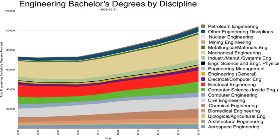Engineering training in Tanzania is typically provided by various universities and technical institutions in the country. Graduate Engineers are registered by the Engineers Registration Board after undergoing three years of practical training. A candidate qualifies as a professional engineer (P-Eng) if he or she holds a minimum four years post-secondary engineering education and a minimum of three years of post-graduate work experience.